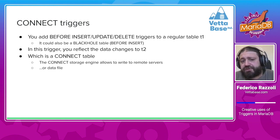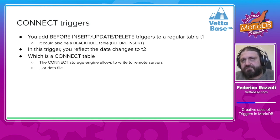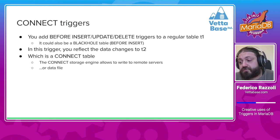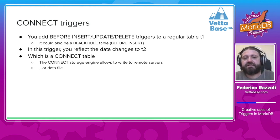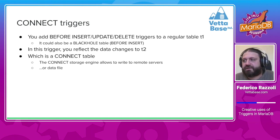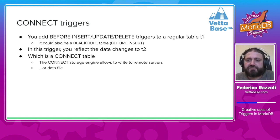t2 is actually a Connect table, built with the Connect storage engine. As the name says, Connect can connect to a remote server — it could be a MariaDB remote server, or any database using ODBC. It can also access a local data file, such as a CSV, JSON, or XML file. For our use case, it's more interesting to reflect the changes to a remote table. Of course, this is something you cannot do if the table is written often.